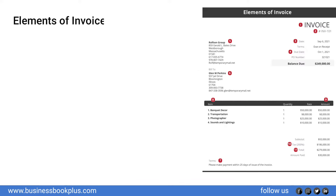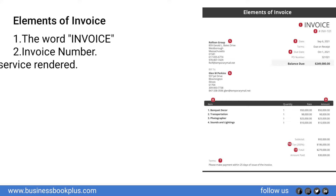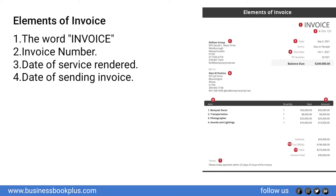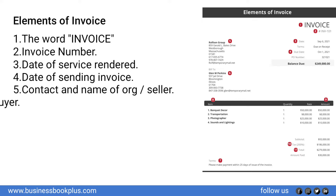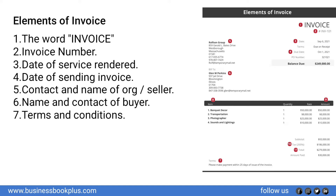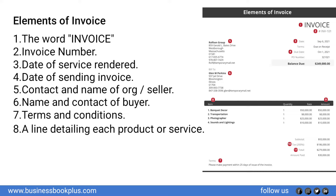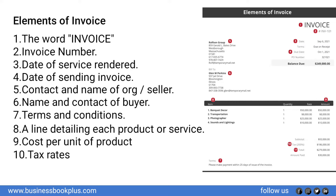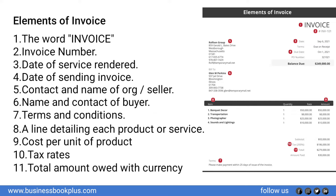Elements of an invoice: number one, the word invoice; number two, invoice number; number three, date of service rendered; number four, date of sending invoice; number five, contact and name of organization or seller; number six, name and contact of buyer; terms and conditions; a line detailing each product or service; cost per unit of product; tax rates; total amount owed with currency.